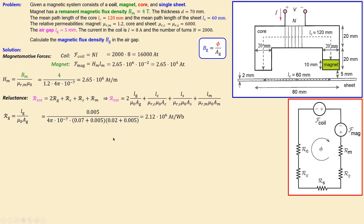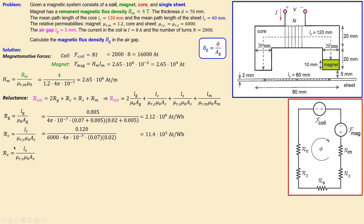This value is multiplied by 2 to account for both gaps. The core reluctance uses the relative permeability of the core (6000), giving 11.4 × 10³ A/Wb. The sheet reluctance, calculated similarly with its mean path length of 60 mm, gives 56.8 × 10³ A/Wb. The key difference between core and sheet is the different mean path lengths and cross-sectional areas.